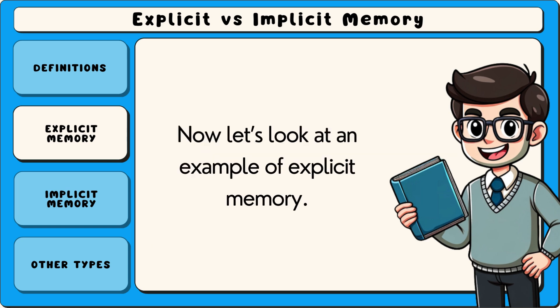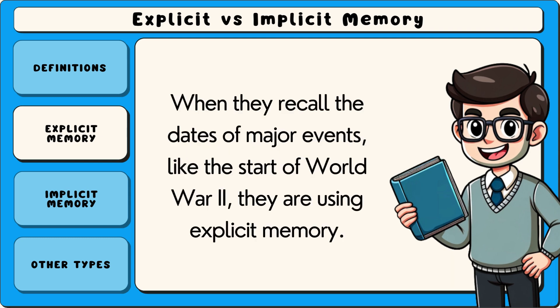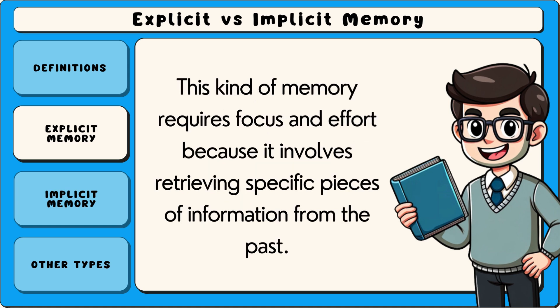Now let's look at an example of explicit memory. Imagine a student studying for a history test. When they recall the dates of major events like the start of World War II, they are using explicit memory. This kind of memory requires focus and effort because it involves retrieving specific pieces of information from the past.